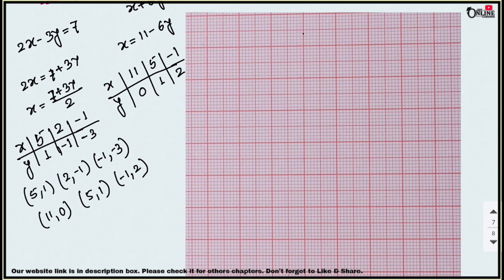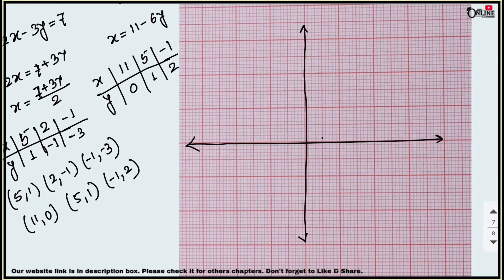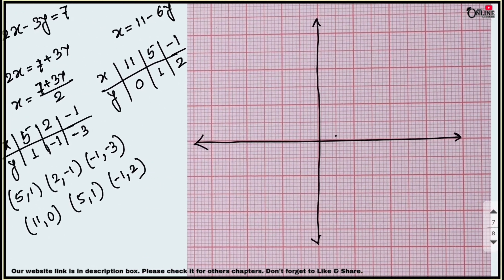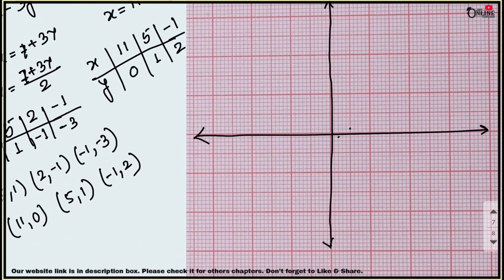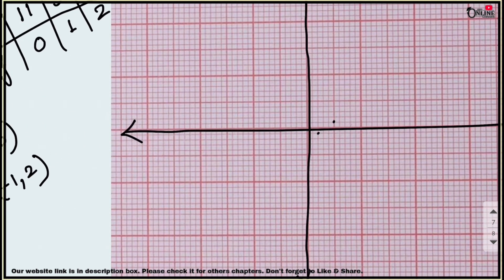The common point is (5, 1), so that will definitely be your answer. Draw the x-axis and y-axis. Plot the first line's points: (5, 1) — go to 5 on x, 1 up on y. Then (2, −1) — x equals 2, y equals minus 1. Then (−1, −3) — x equals minus 1, y equals minus 3. Join to form the first line.